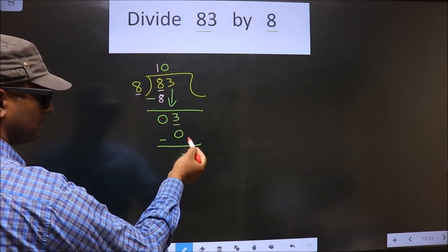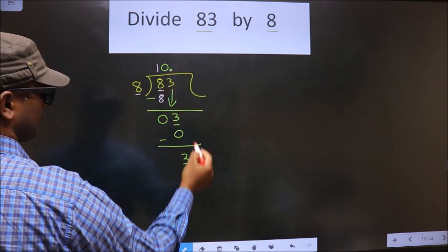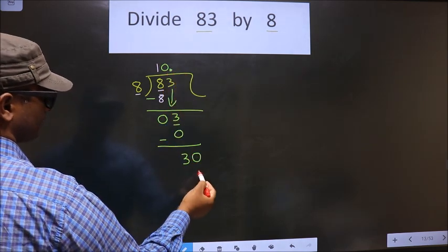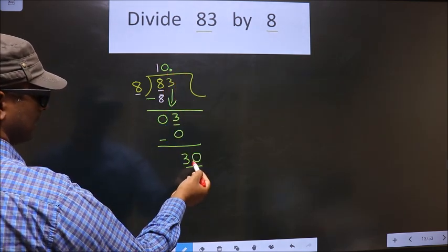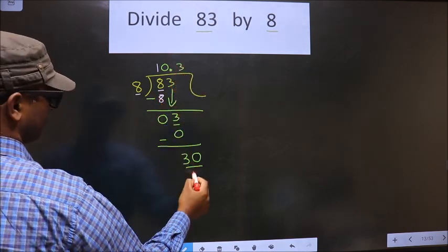Now we did not bring any number down. So now you put the decimal here and take 0. So here we have 30. A number close to 30 in the 8 table is 8 times 3 is 24.